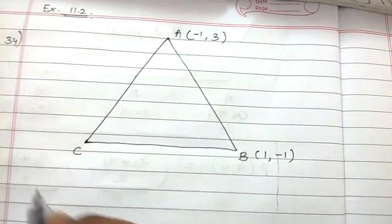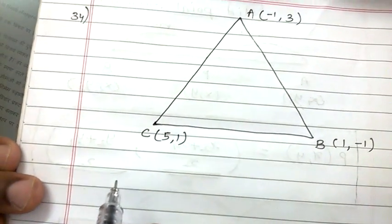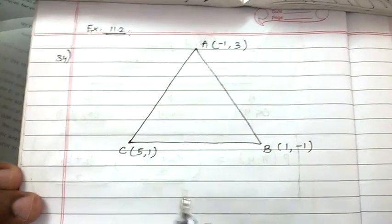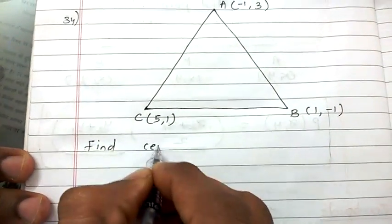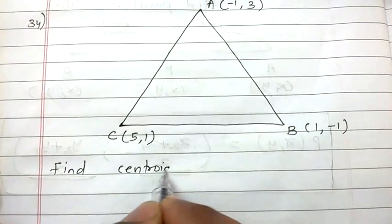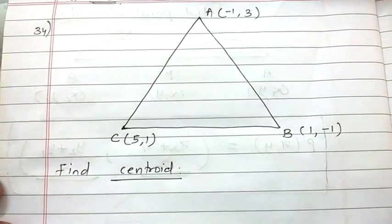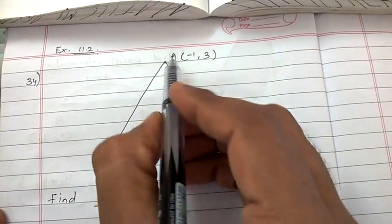and coordinates of C are (5, 1). What we have to find over here? Find centroid. Centroid will be over here as G.